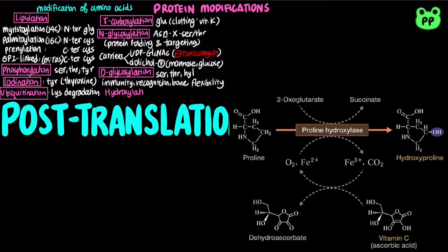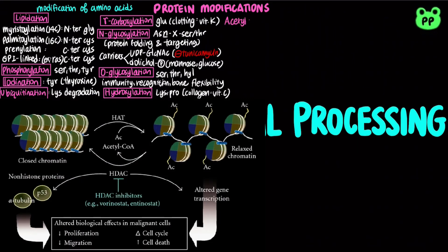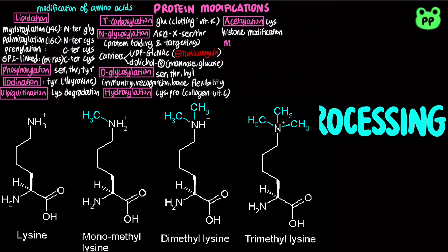Hydroxylation typically occurs at lysine and proline residues, such as in collagen, and requires vitamin C. Acetylation occurs at the lysine tail of histones to promote the euchromatin structure. It is an important mechanism in chromatin remodeling, which has been discussed in a previous video on transcription.